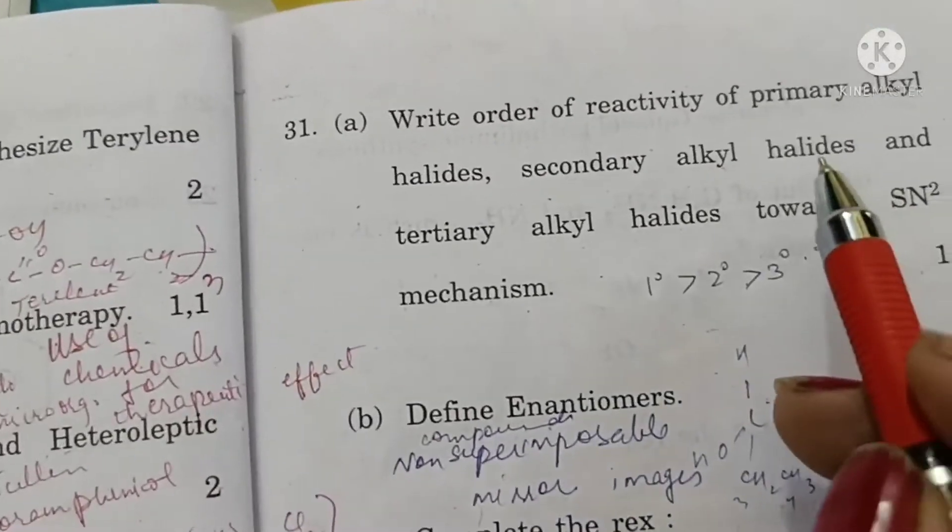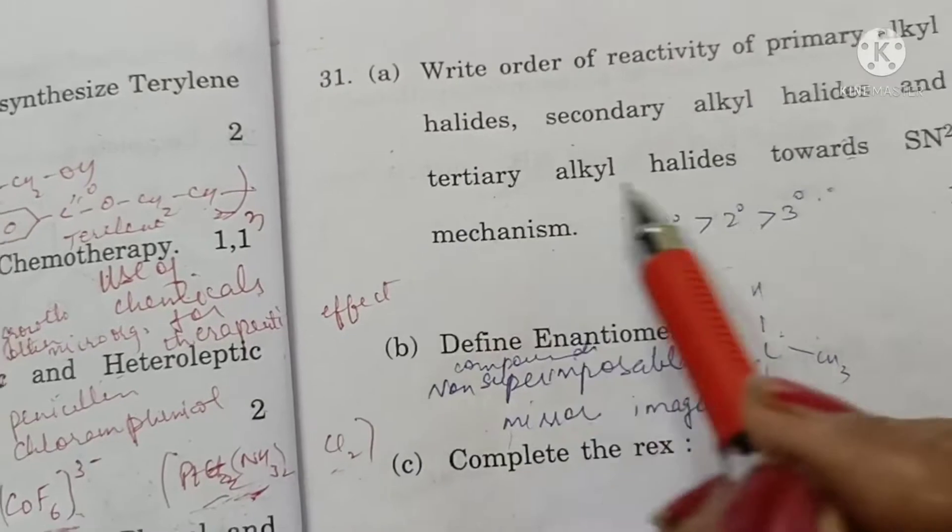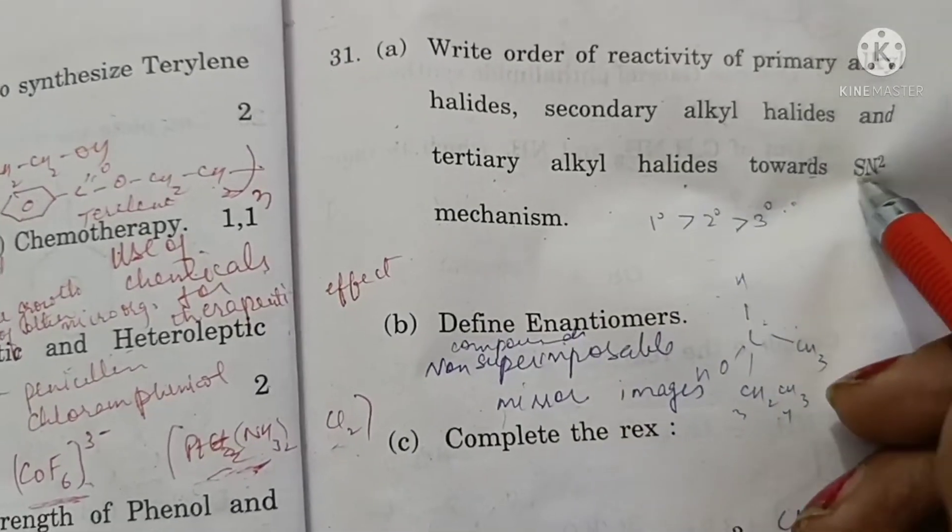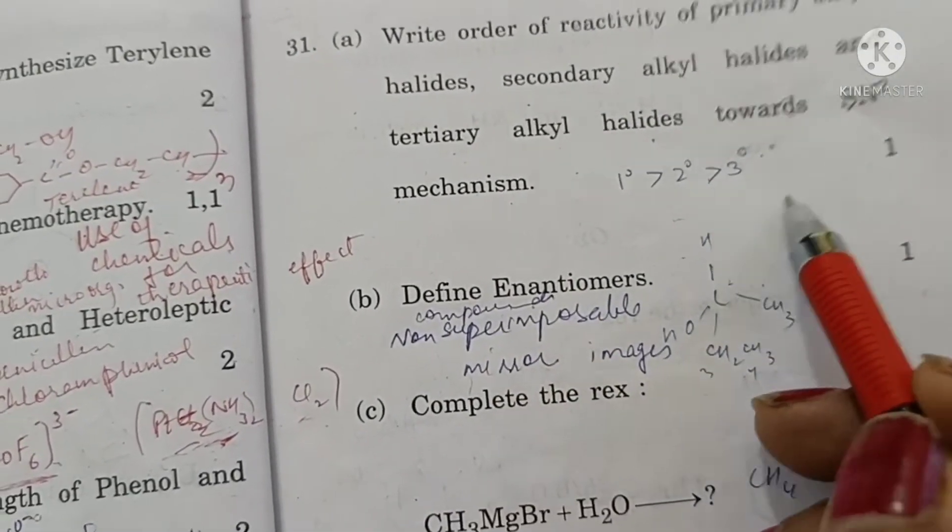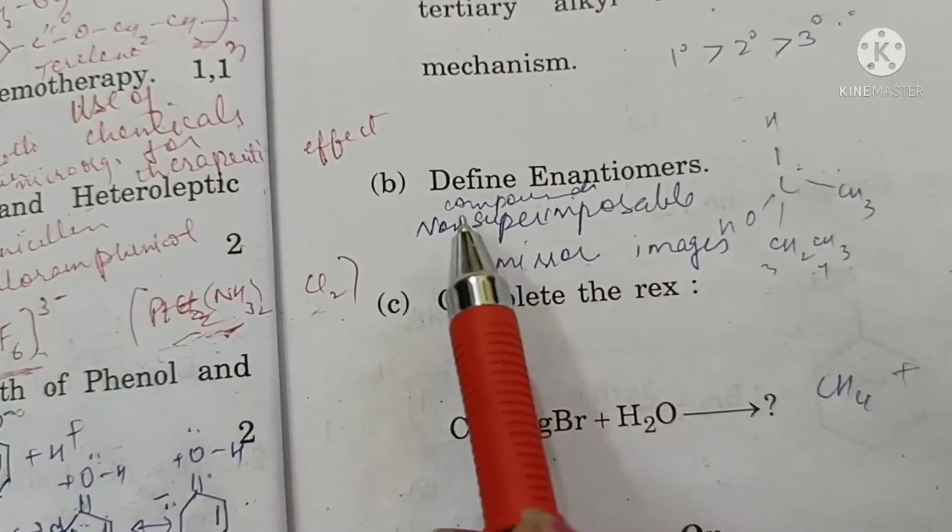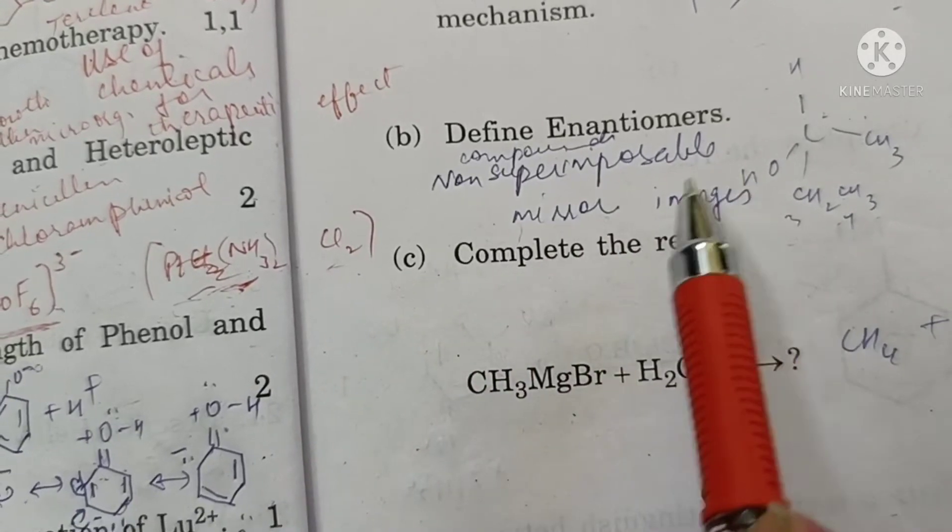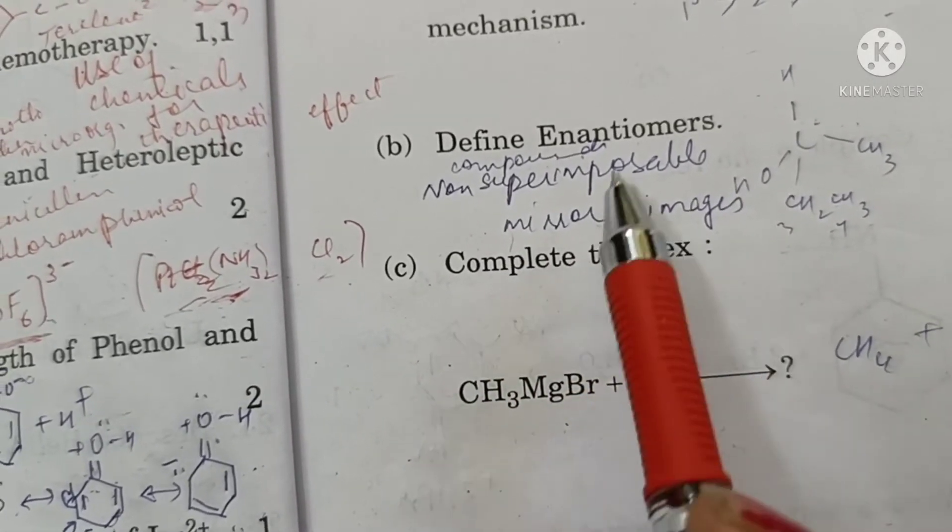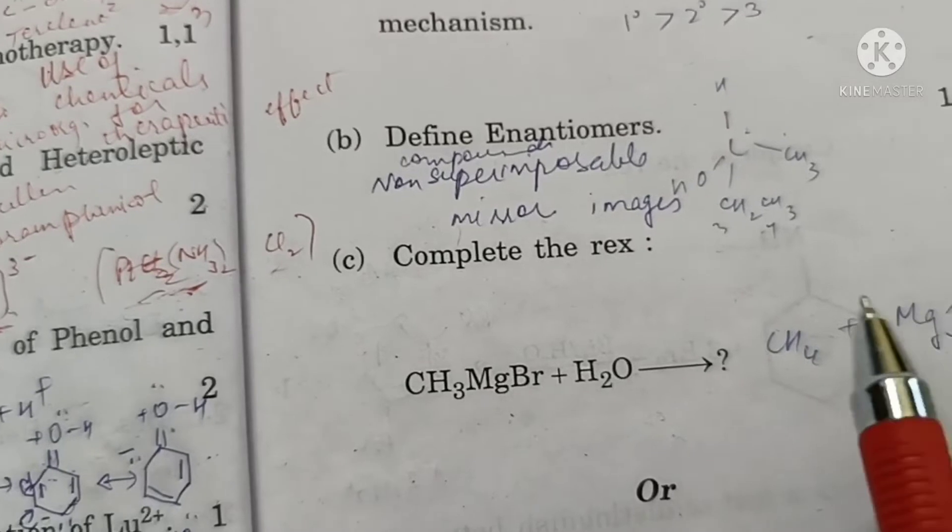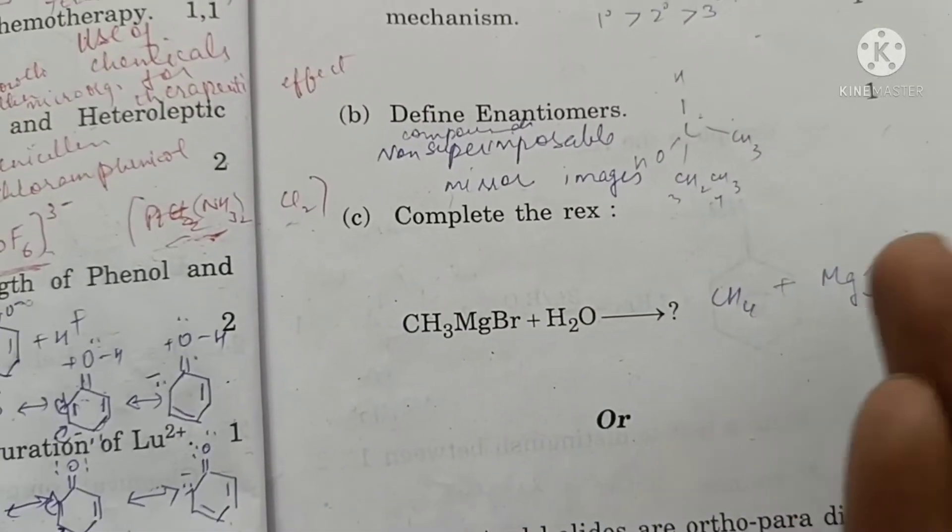Write order of reactivity of primary alkyl halides, secondary alkyl halides and tertiary alkyl halides towards SN2. Primary are more reactive than secondary than tertiary. Define enantiomers. Compounds which are non-superimposable mirror images of each other are called enantiomers. They are optically active and bend the plane polarized light.